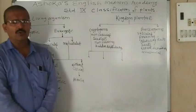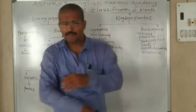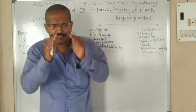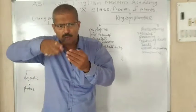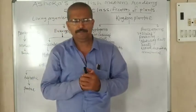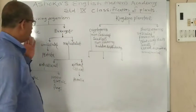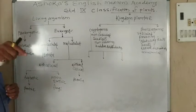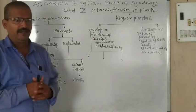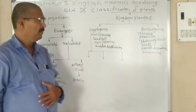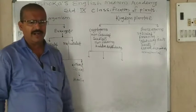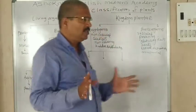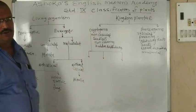The second group is eukaryotic. Eukaryotic means all nuclear organelles and cytoplasm are bounded with a nuclear membrane. These are the two main divisions of living organisms as described by Whittaker in 1959. Now, eukaryotic cells are further divided into two subdivisions: unicellular and multicellular.